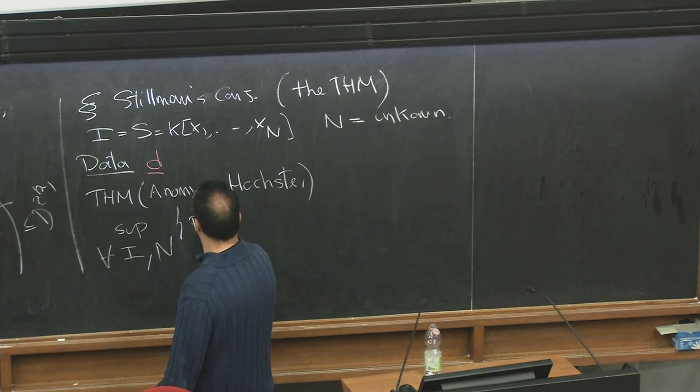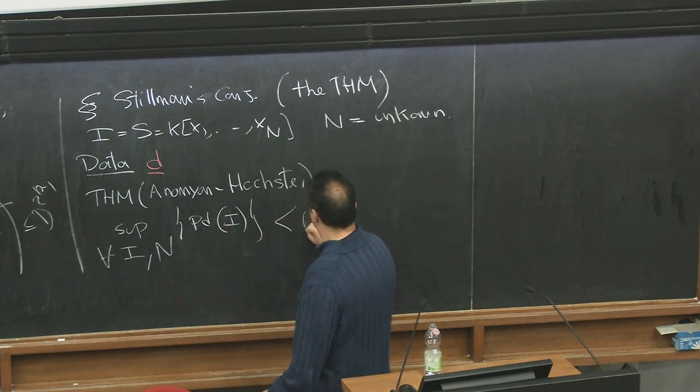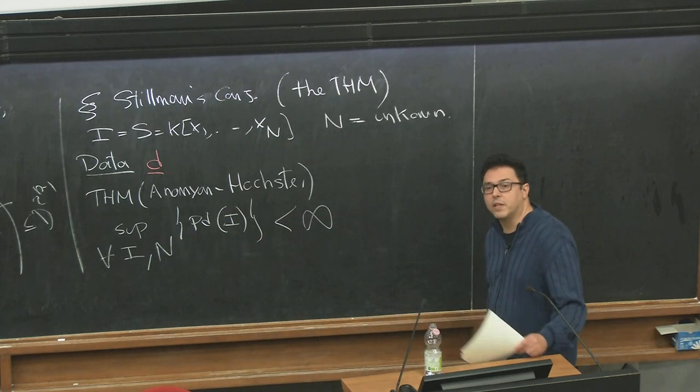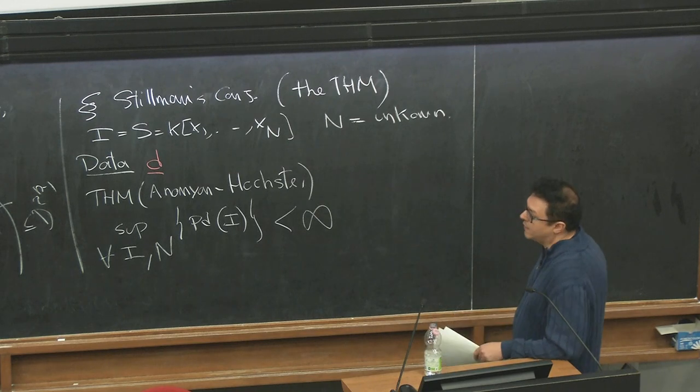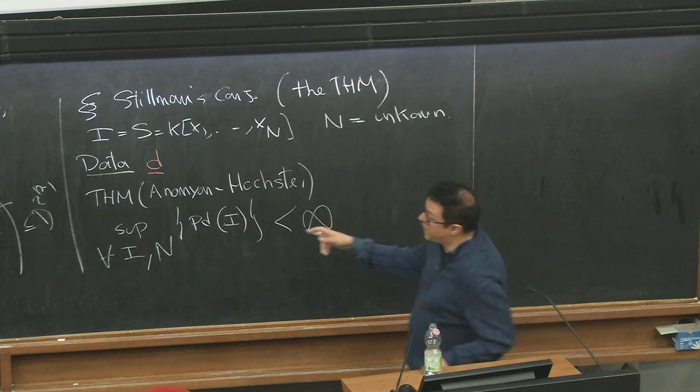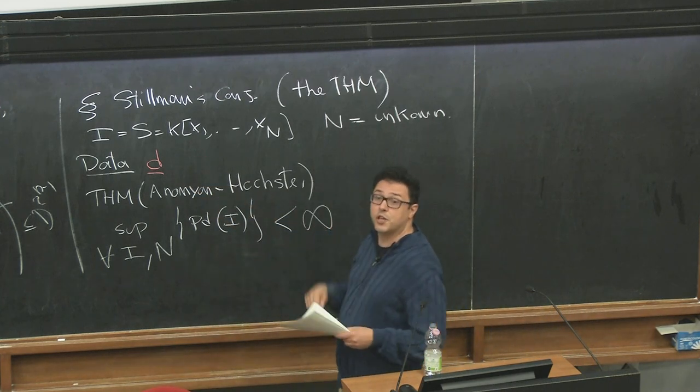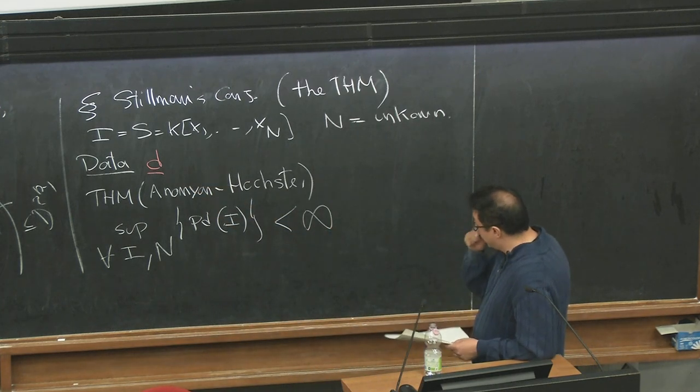With this type of data, the solution of Stillman conjecture is basically theorem by Ananyan and Hochster. This says that if you care for the projective dimension—a mundane invariant, I didn't place the projective dimension at first because I had N as my number of variables, so that N would be an easy bound for the projective dimension—but if you look at every possible ideal,